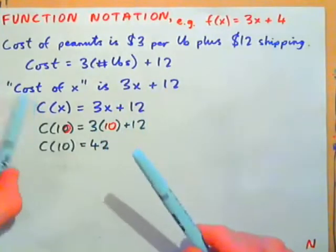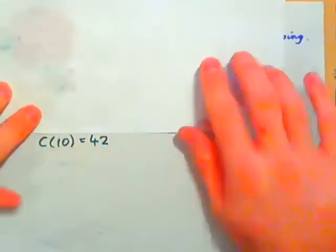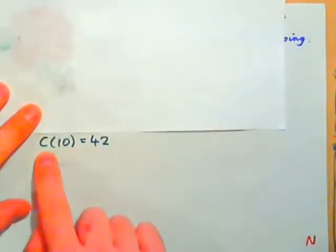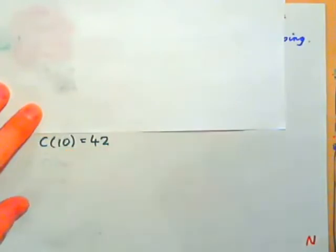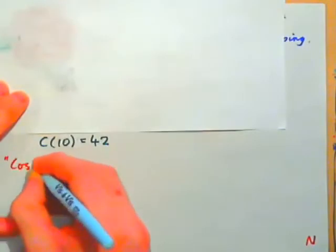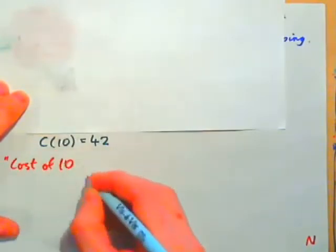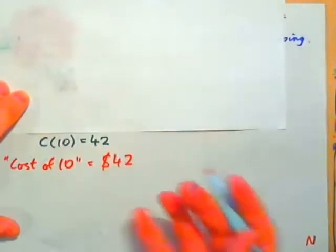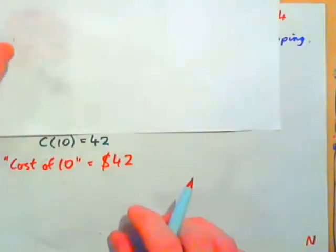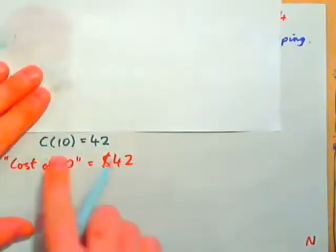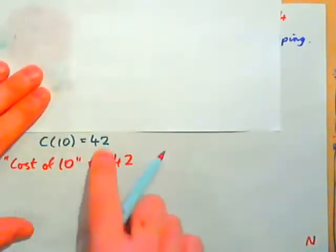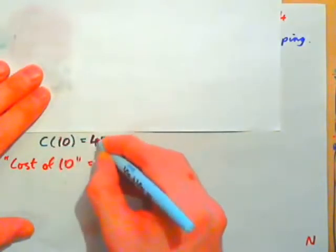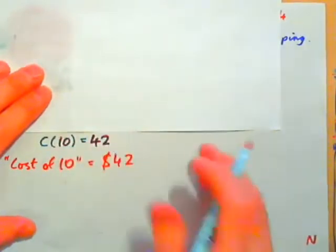And now, if we just had this on its own, it says a lot. C parenthesis 10. It says C of 10 equals 42. Or, basically what it's saying is cost of 10 pounds equals $42. Cost of 10 pounds is $42. So, that's why we have function notation, so that in one sentence or equation, we can see the input and the output all at once.